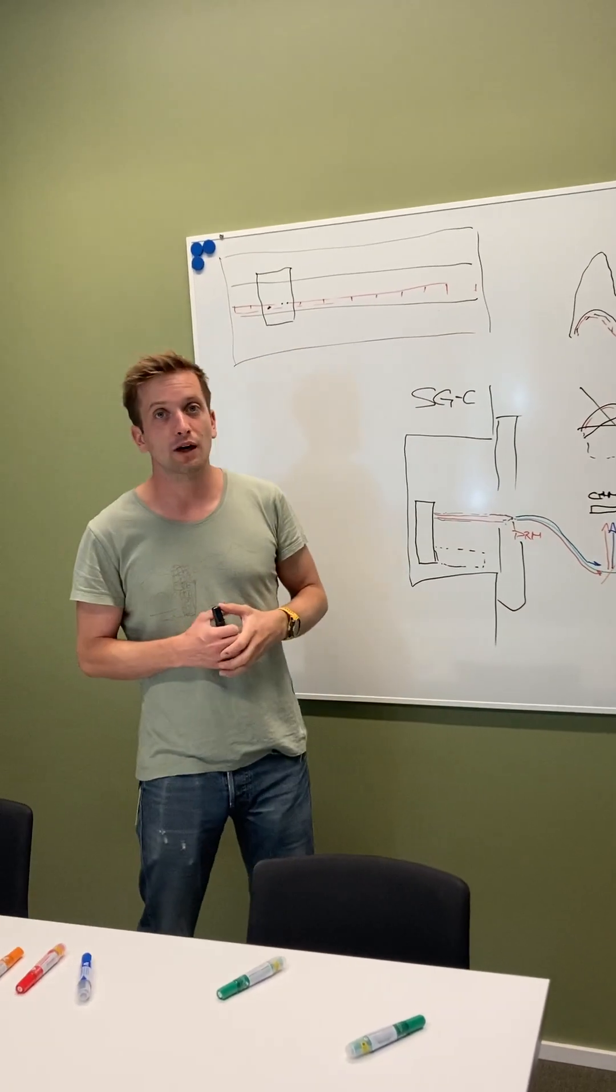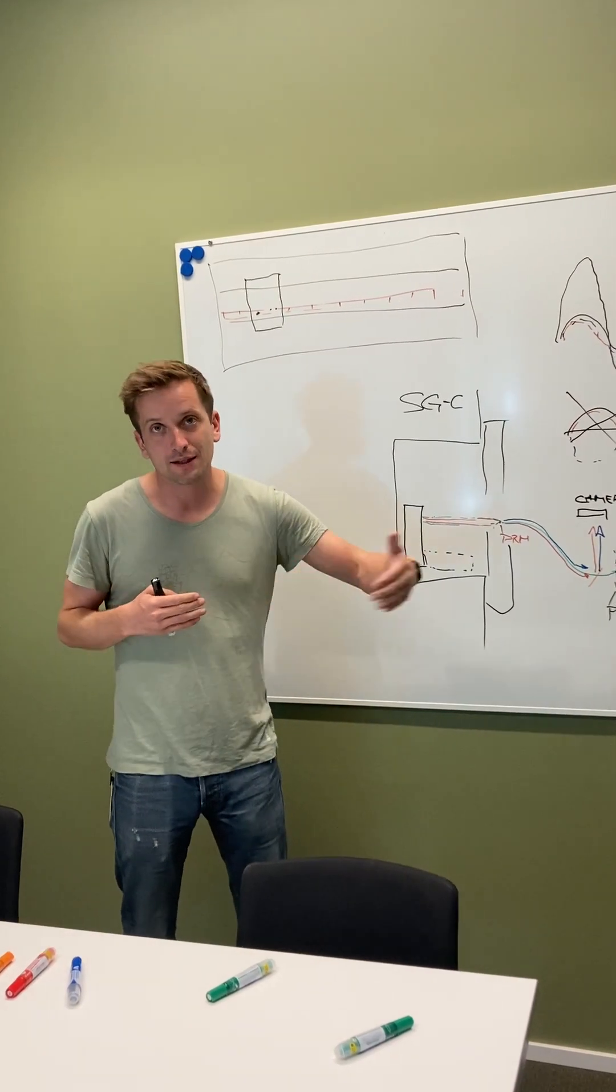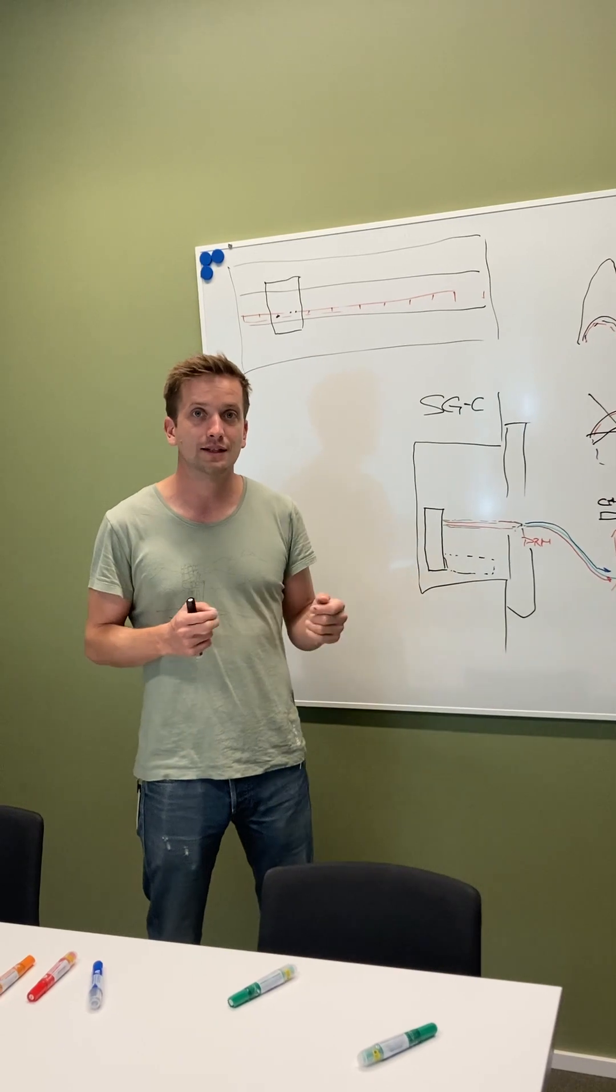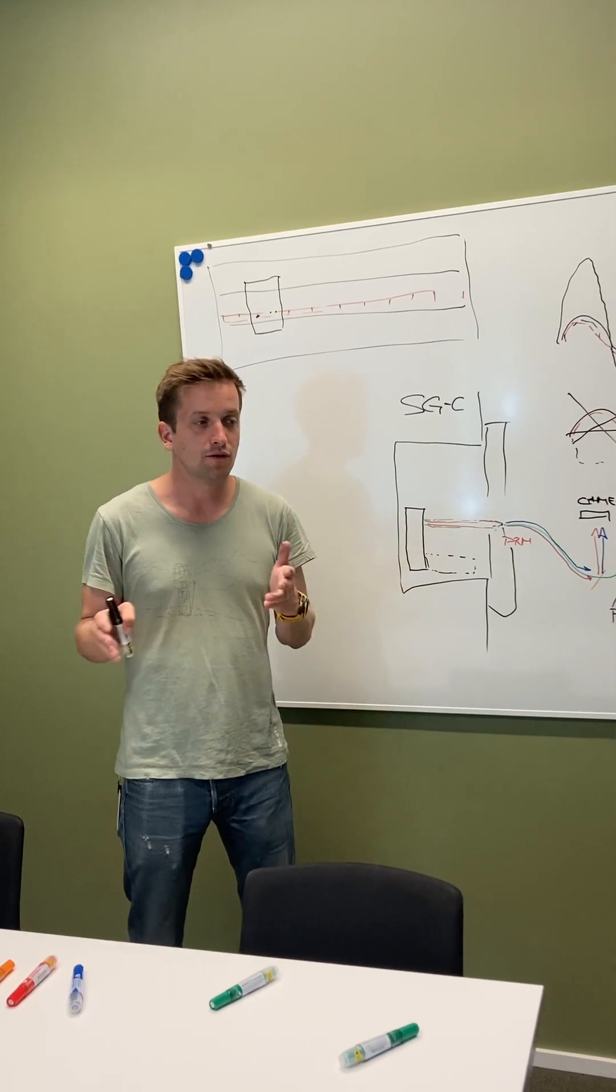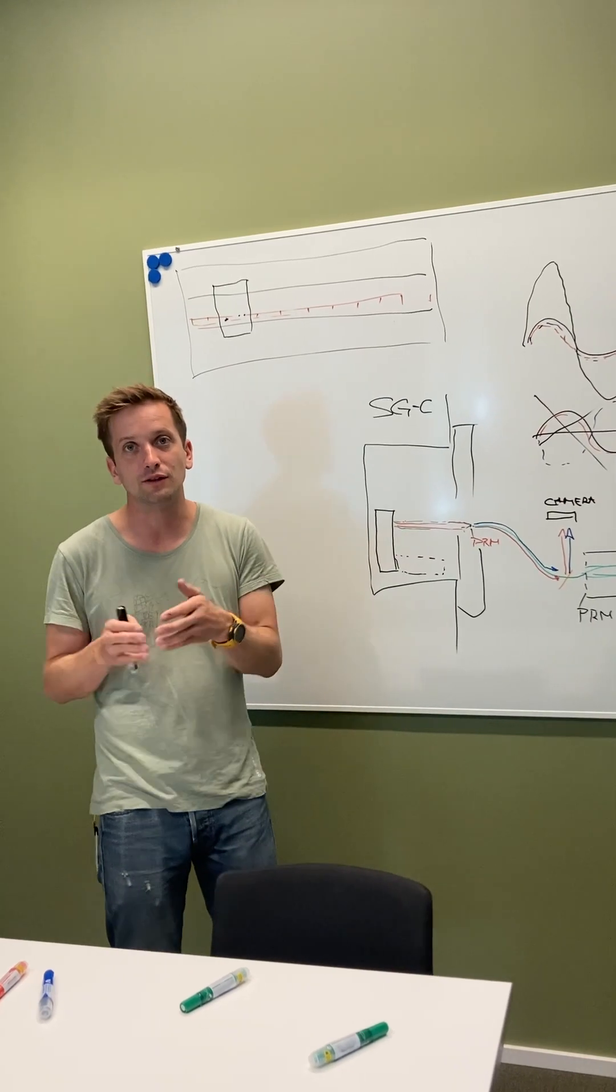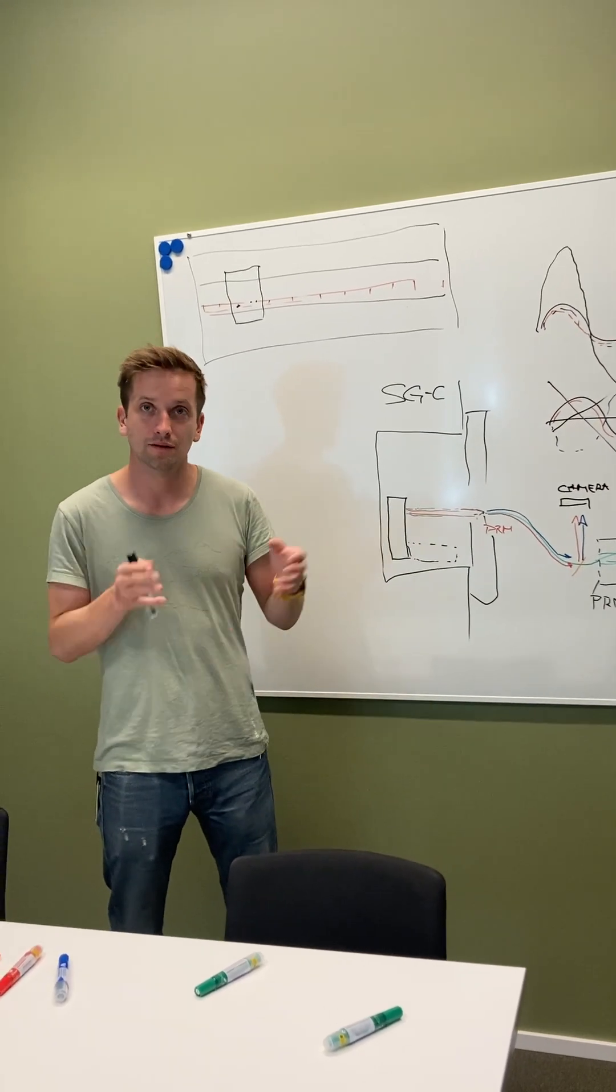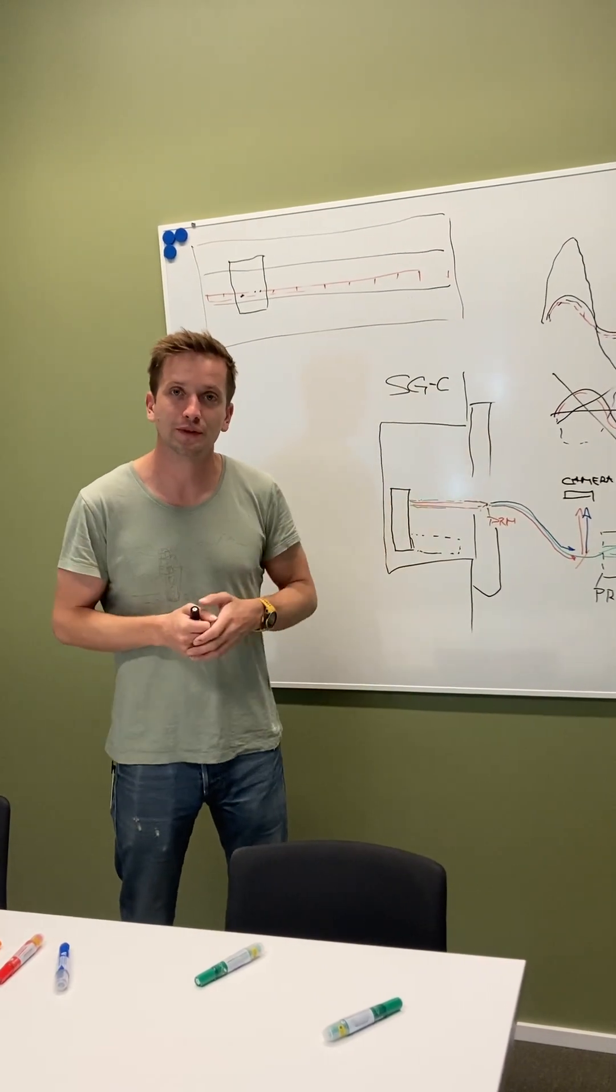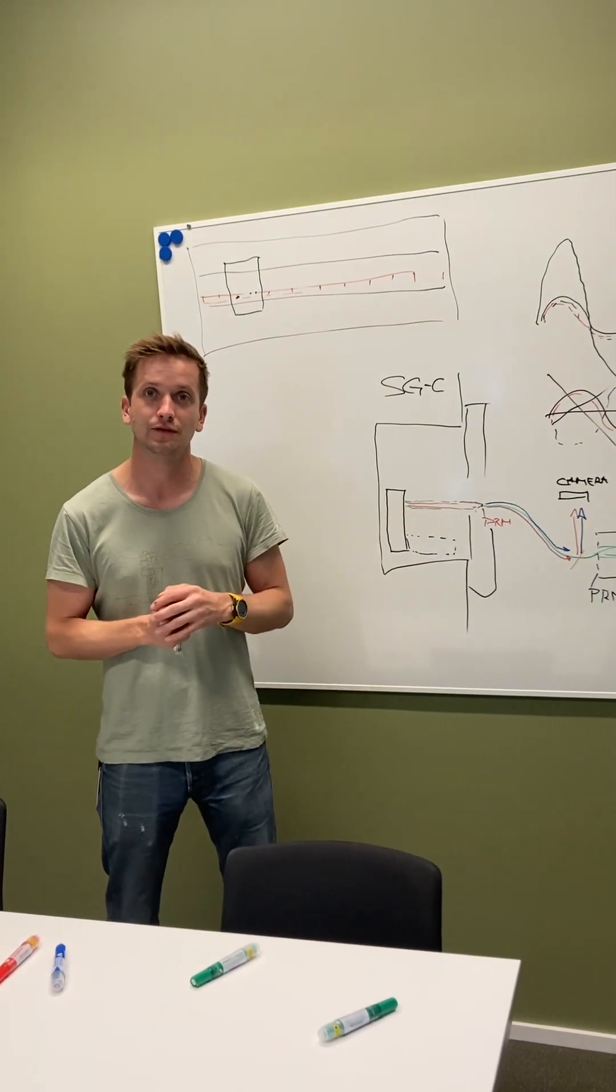With the absolute interferometer, however, you have to make a scan of wavelengths for each measurement, and that's then fairly slow. That's in the range of half a second to two seconds per measurement that you need to invest. So there is also a scope, a different kind of scope that you can achieve with an absolute interferometer.